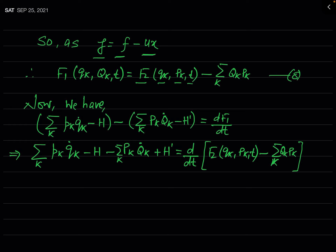The general form of Hamilton's canonical transformation equation — seen in the earlier lecture — is: Σk pk q̇k − H − Σk Pk Q̇k + H' = dF1/dt. We now substitute the value of F1 from equation 8, so F1 is replaced by F2(qk, Pk, t) − Σk qk Pk on the right-hand side.